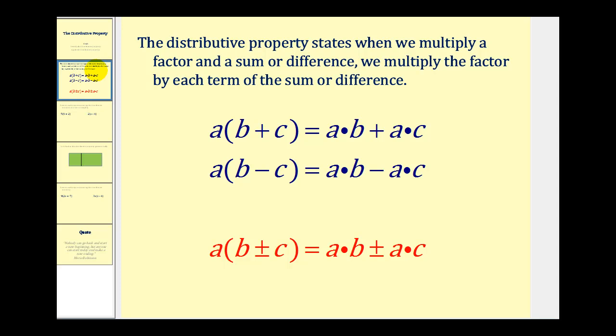The distributive property states that when we multiply a factor and a sum or difference, we multiply the factor by each term of the sum or difference.